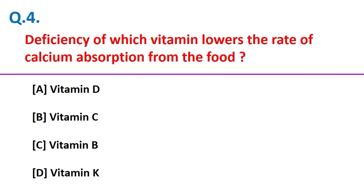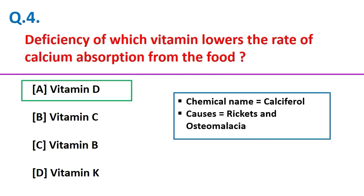Deficiency of which vitamin lowers the rate of calcium absorption from food? Vitamin D. Friends, the chemical name of vitamin D is calciferol, and its deficiency causes rickets and osteomalacia.